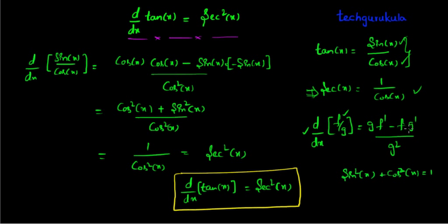If we use all these right-hand side four equations and start doing the derivation, we can prove that derivative of tan of x is nothing but secant square of x. Thank you for watching.